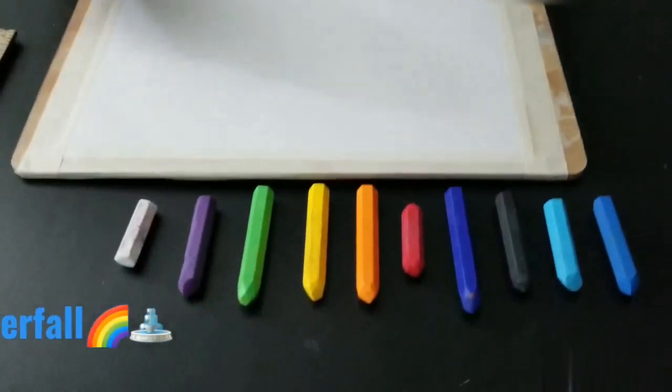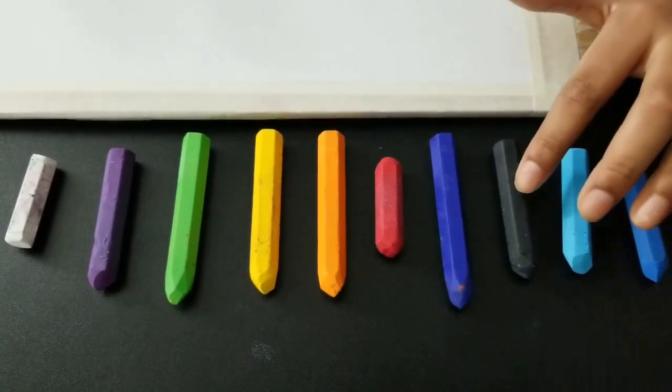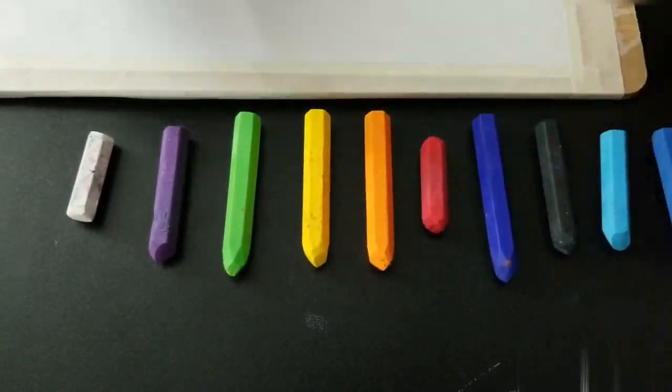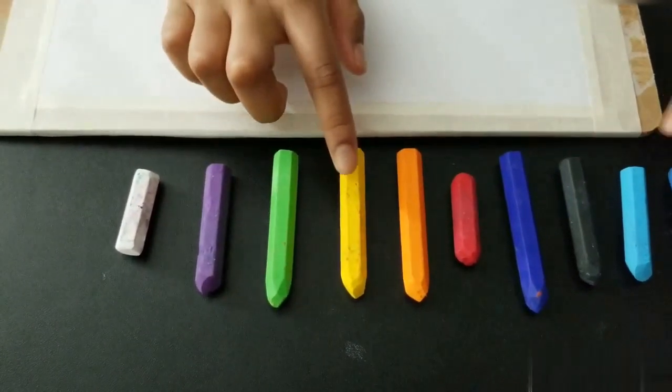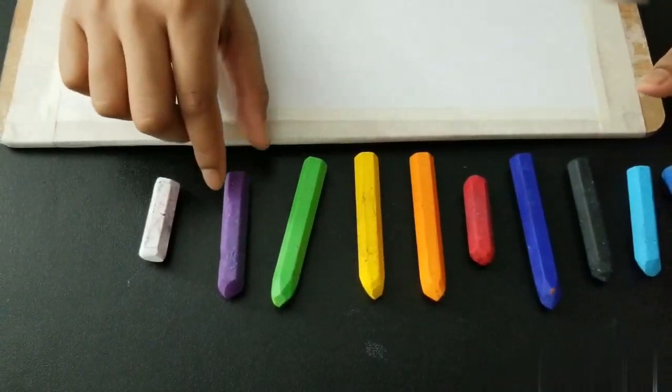Hi friends, welcome to my YouTube channel. Hope you're safe and sound. Today we're going to do an oil pastel drawing which is a rainbow waterfall. The colors we need are blue, light blue, black and white, red, orange, yellow, light green, purple, and white. We set up masking tape around the paper.